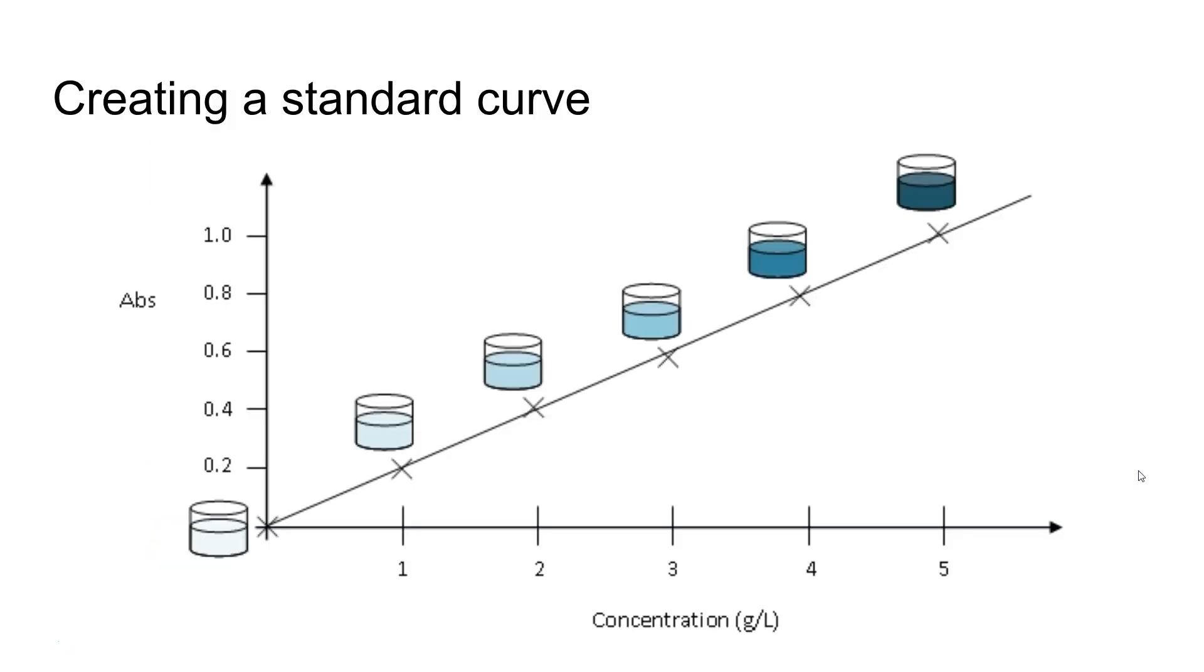When we're all said and done, we're going to use the colorimeter to create a standard curve. We'll be given a sample with a solution where we know the concentration, and then we'll do a serial dilution and dilute each sample down by a certain factor. If we know what that factor is, we can create a nice standard curve for a known solution.